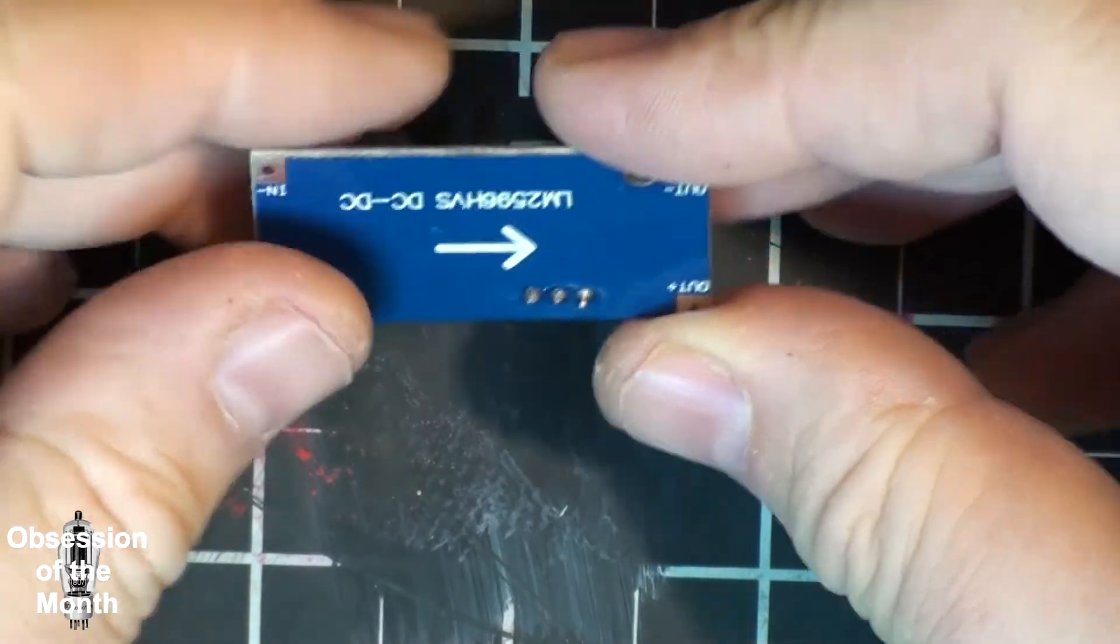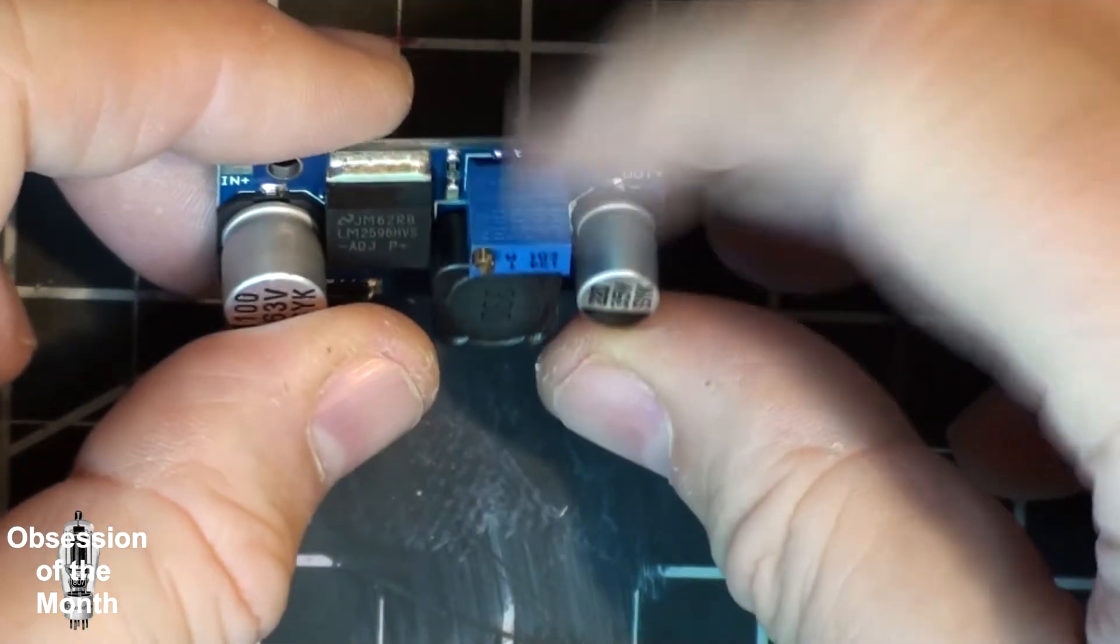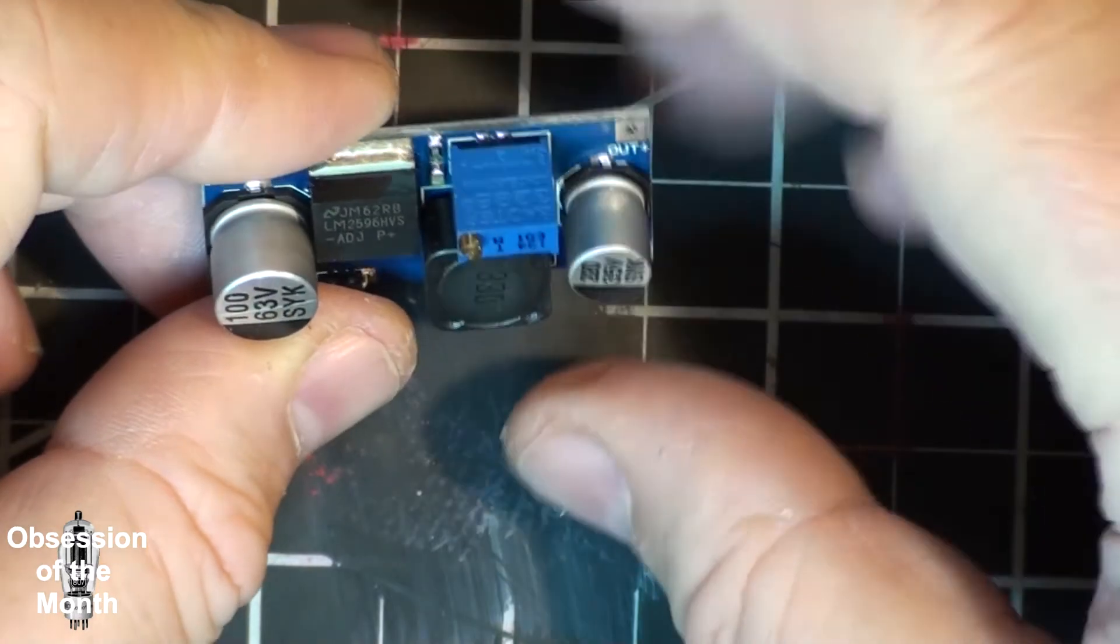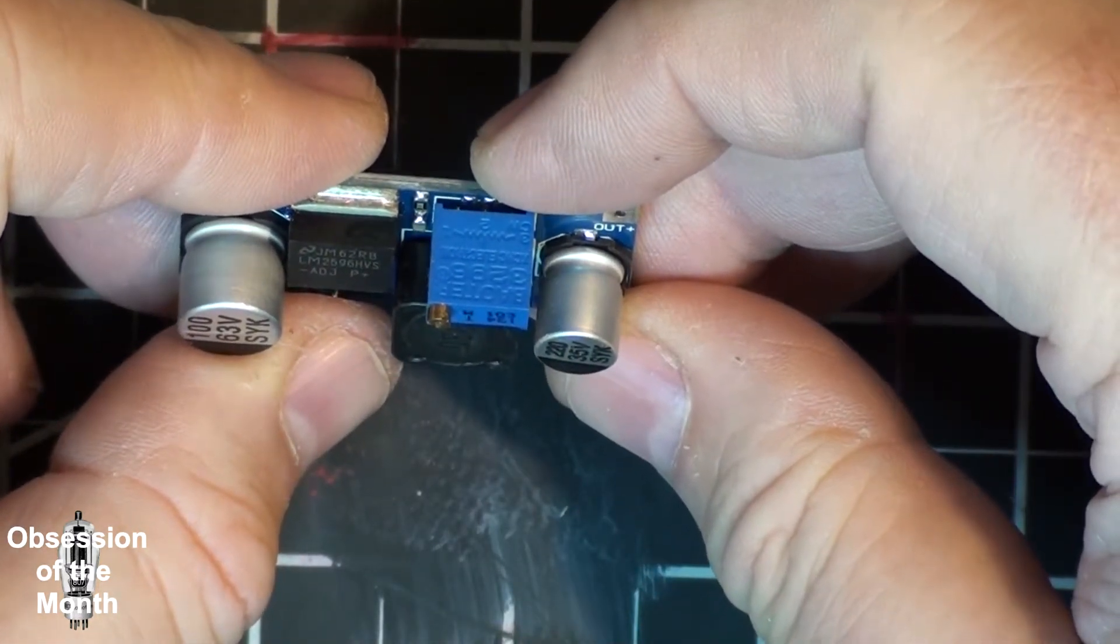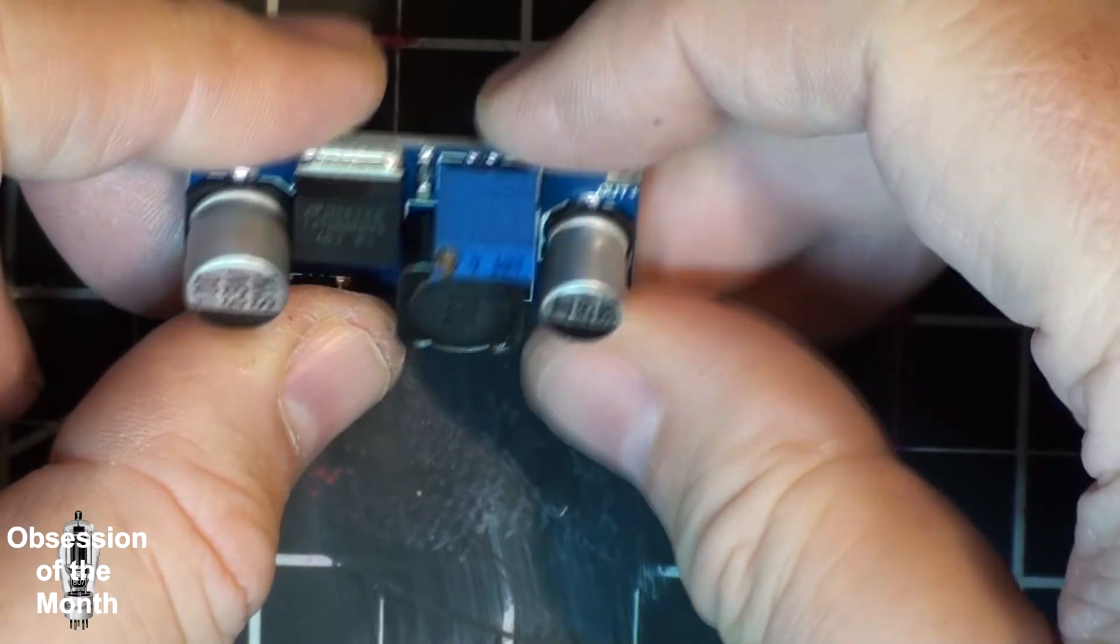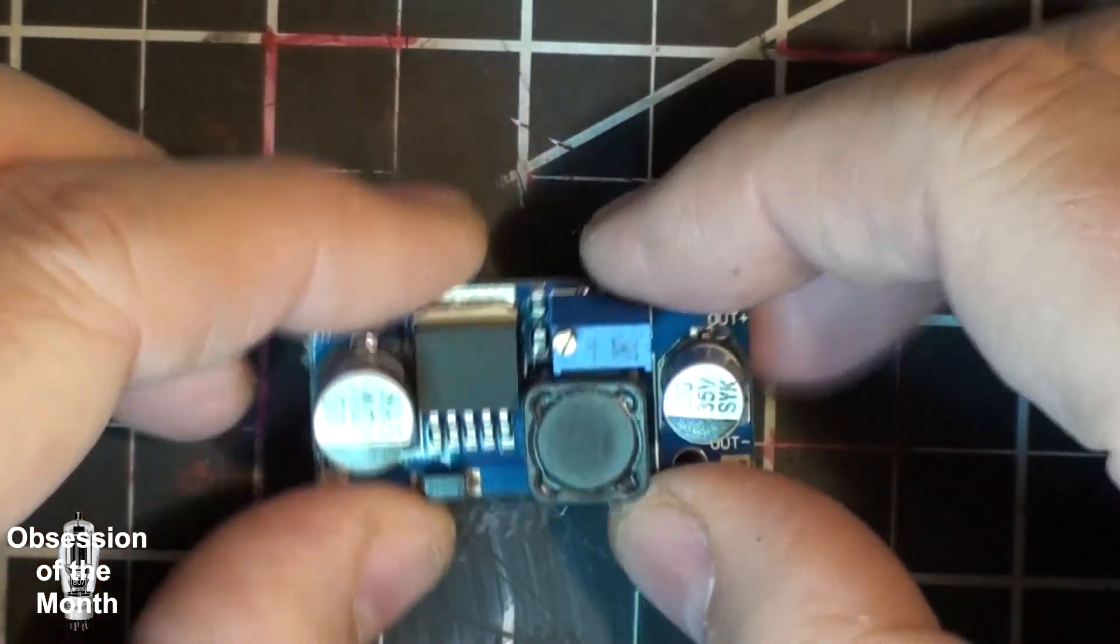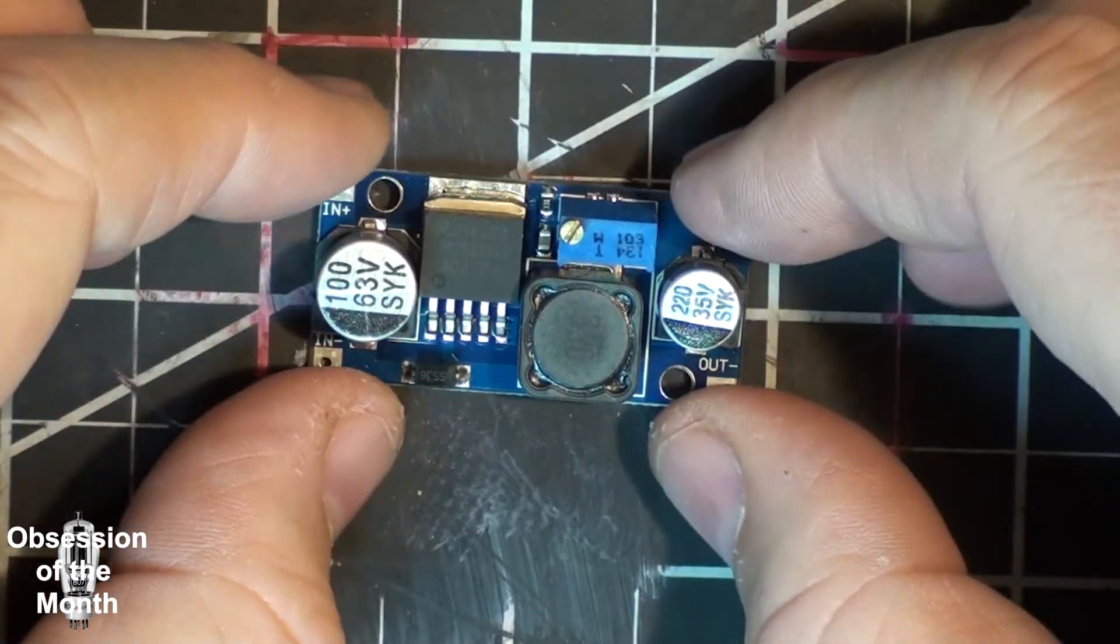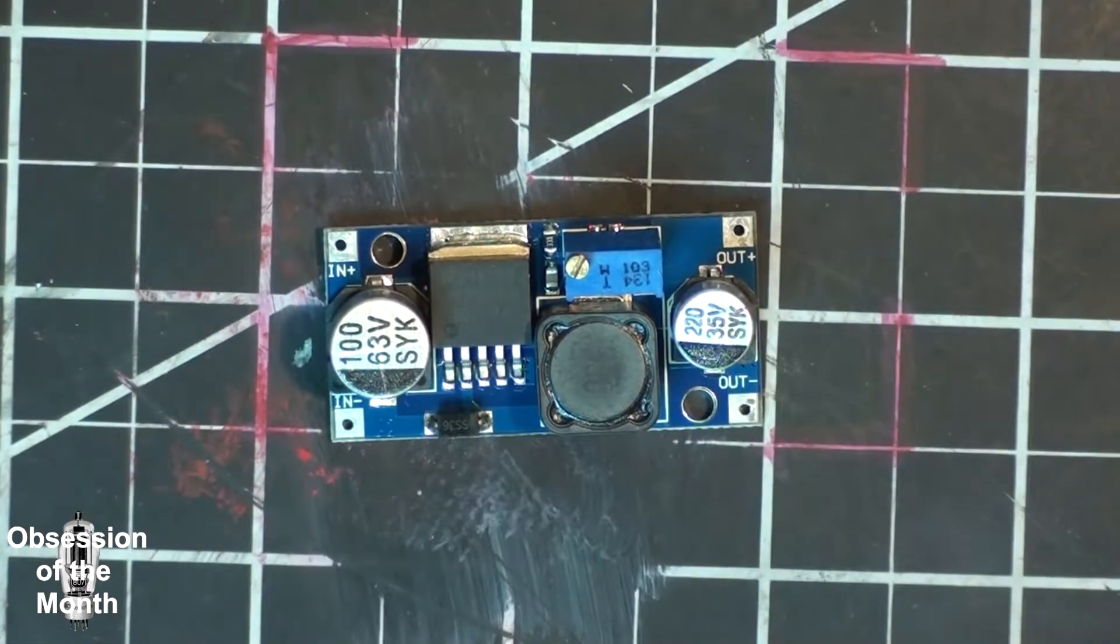You can actually remove this pot - I believe it's a 10k pot - and replace it with a larger one for mounting in a panel if you need adjustable power.